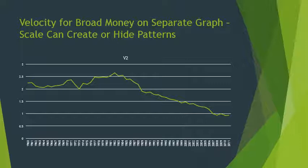This is the velocity for M2 broad money on a separate graph. The point is that the scale of the graph matters. In the previous combined graph, the M2 change was compressed because M1 was going from 4 to 10 to 3, making the change from 2.5 to 1 look small. When you look at M2 separately, the change is quite dramatic. It is more or less constant in the early period up to about 1984, going from 2 to 2.5, so in that range one would expect a stable money demand function.